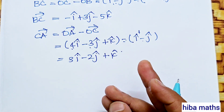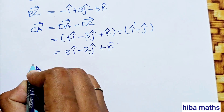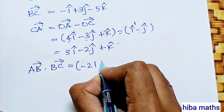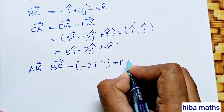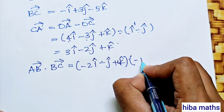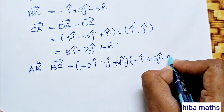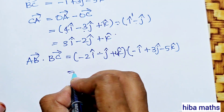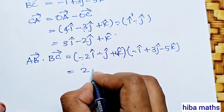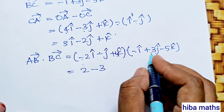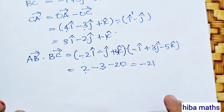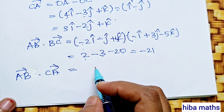Now we compute the dot products. AB · BC = (-2i - j + 4k)·(-i + 3j - 5k) = (-2)(-1) + (-1)(3) + (4)(-5) = 2 - 3 - 20 = -21. This is not 0, so AB is not perpendicular to BC.